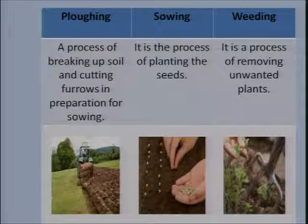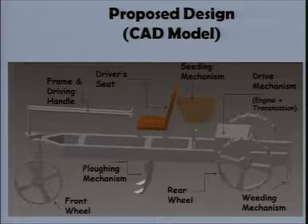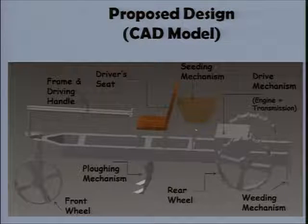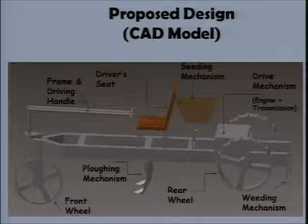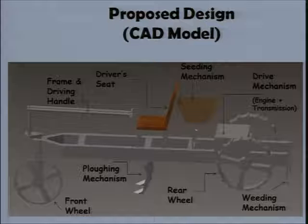We started with the basics — what should be the design. Tractors are available in the market, and there are farmers who are still using animals to cultivate crops. We started from the basics: why are some farmers still not purchasing tractors, even though small tractors are coming in the price range of two lakh rupees? We started realizing that cost is the major concern. So we concentrated basically on cost — how we can cut down the cost of the machine and how we can combine all the operations in a single device.